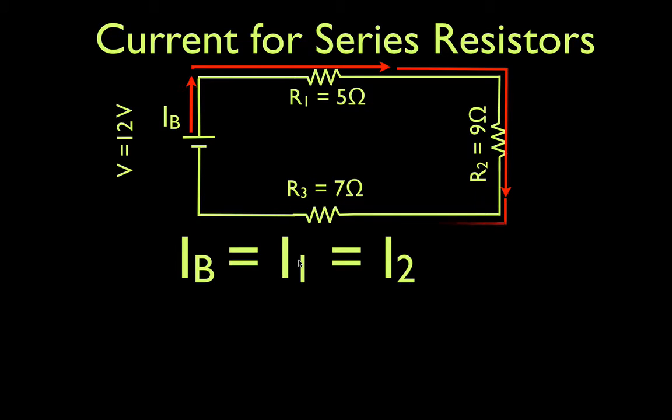And then the current continues and it goes through resistor number three and that means it's equal to two, to one, and also to the current out of the battery. And then it comes back and whatever left the battery, the current out of the battery is the same current that comes back to the battery after going through the resistors.